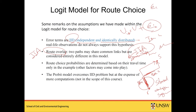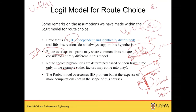There are ways to account for overlapping in route choice models, though not covered in this course. Route choice probabilities here are determined based on travel time only. We assume the utility function is only a function of travel time. The probit model was proposed in the literature to address the IID assumption issue — when IID doesn't hold in logit, probit can help — but probit is more computationally expensive, which is why logit is more commonly used.